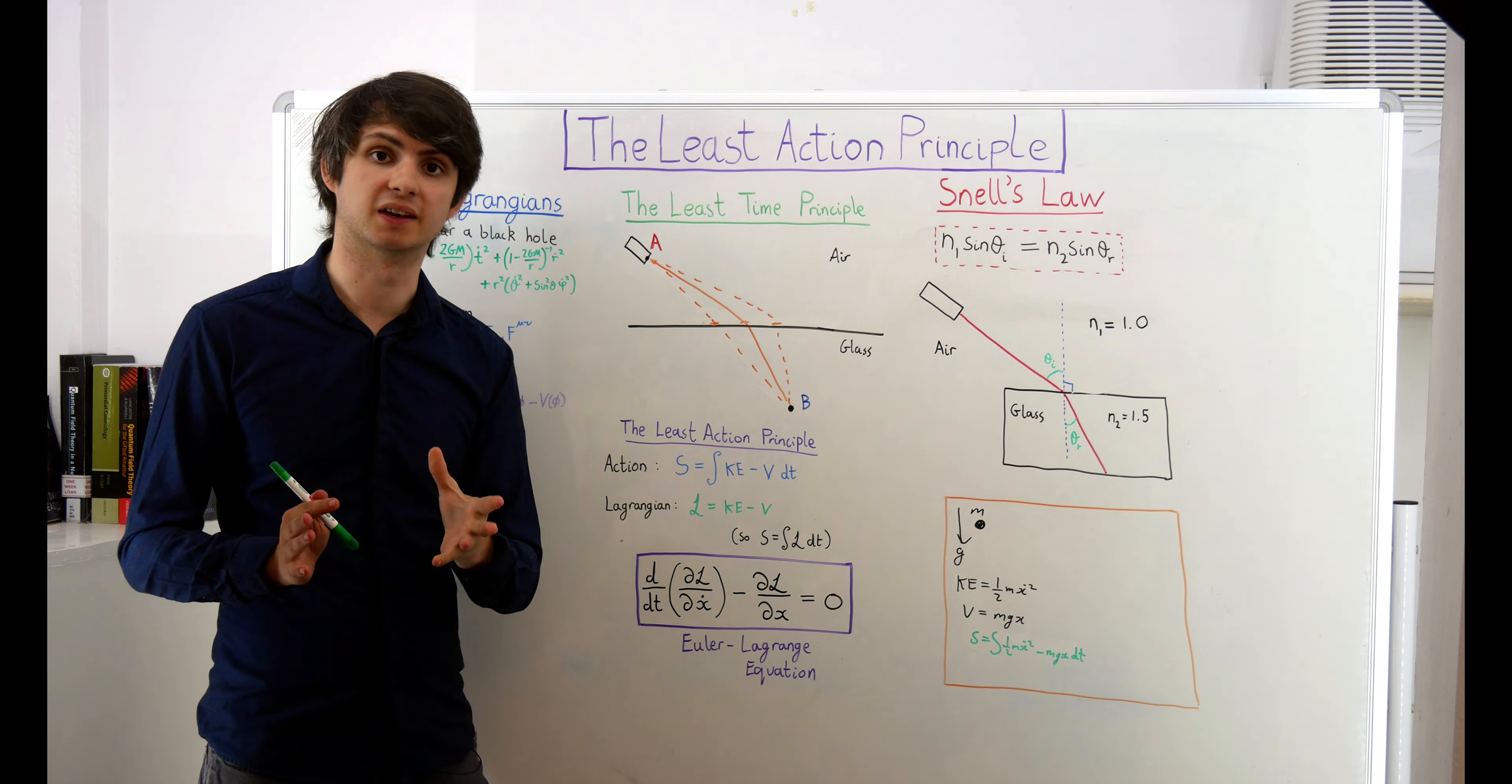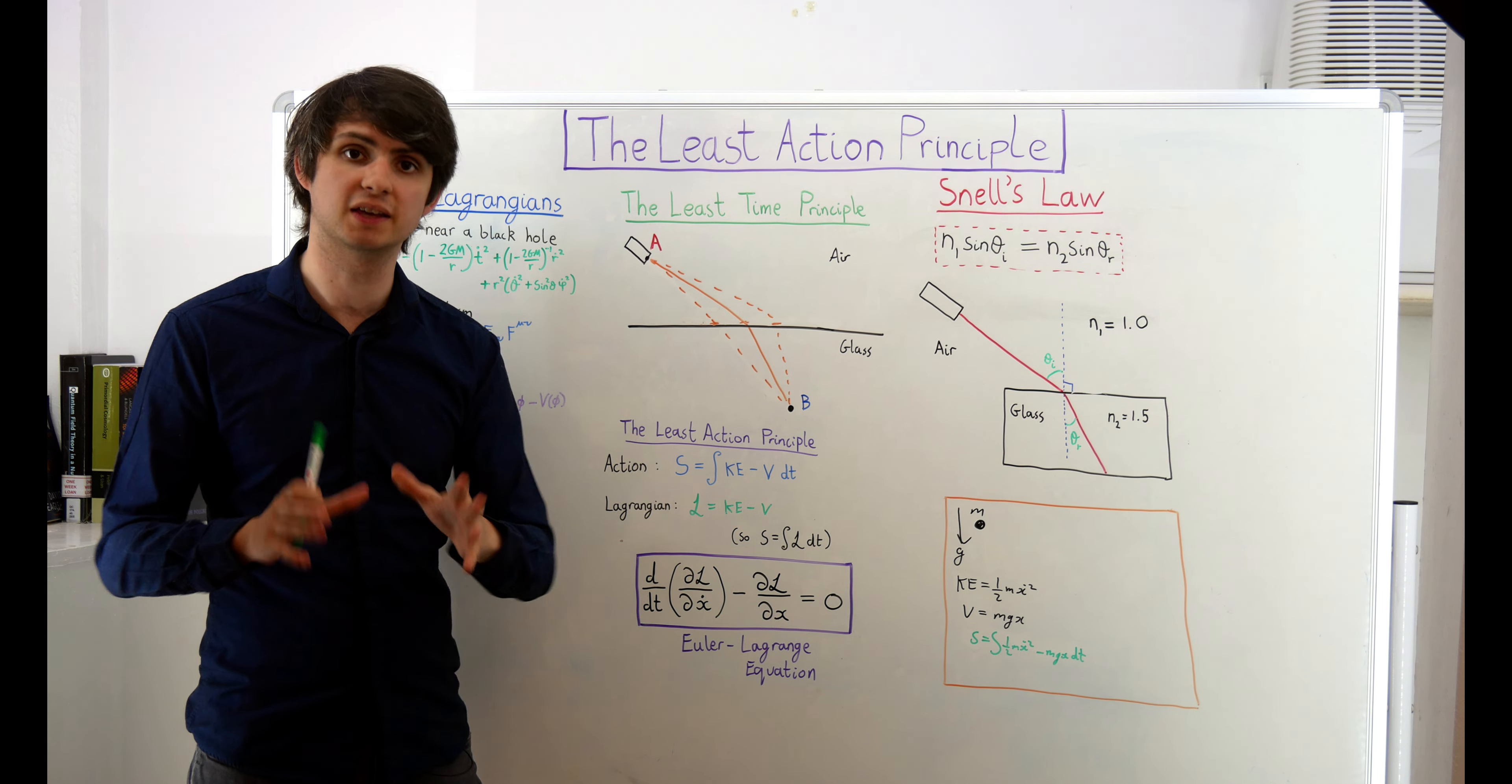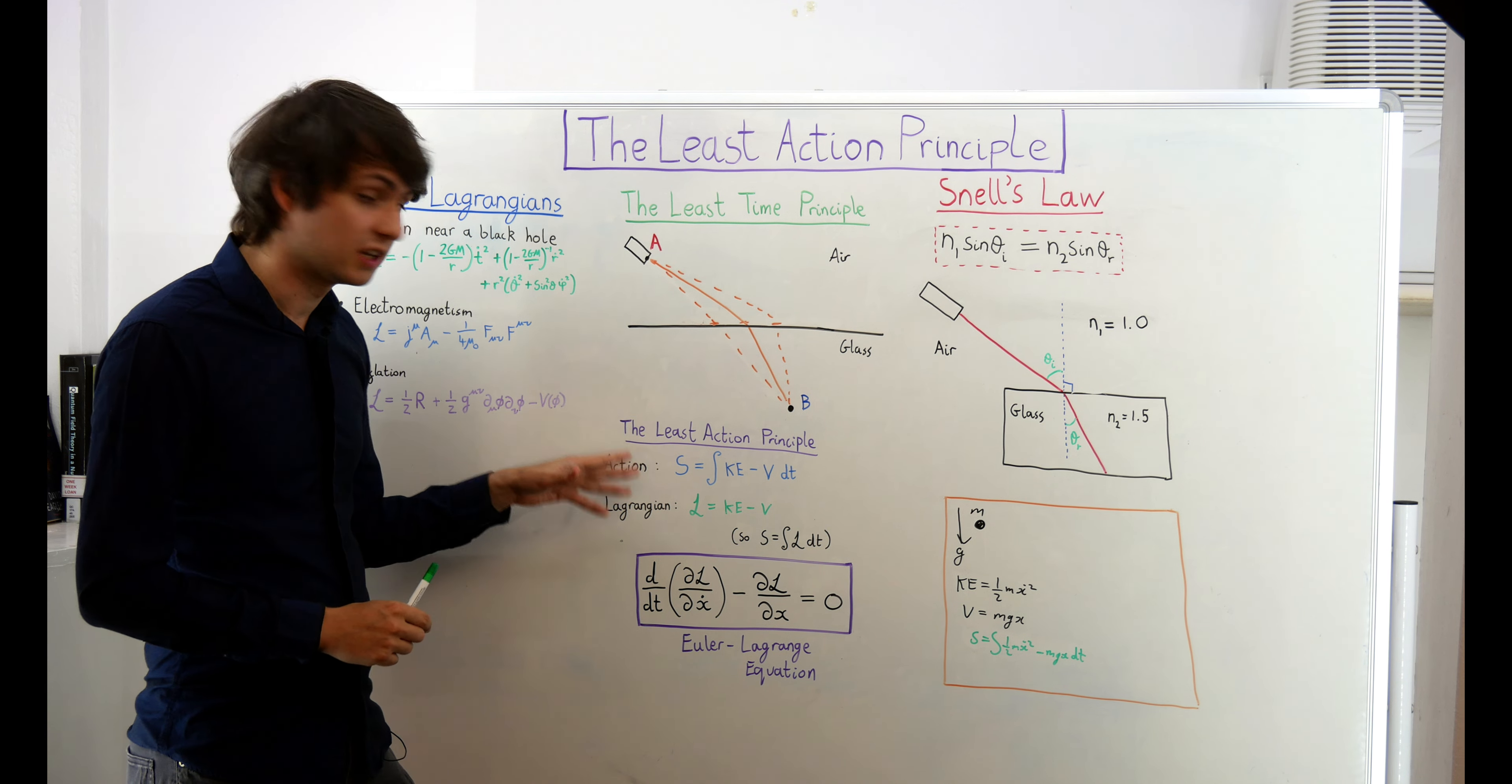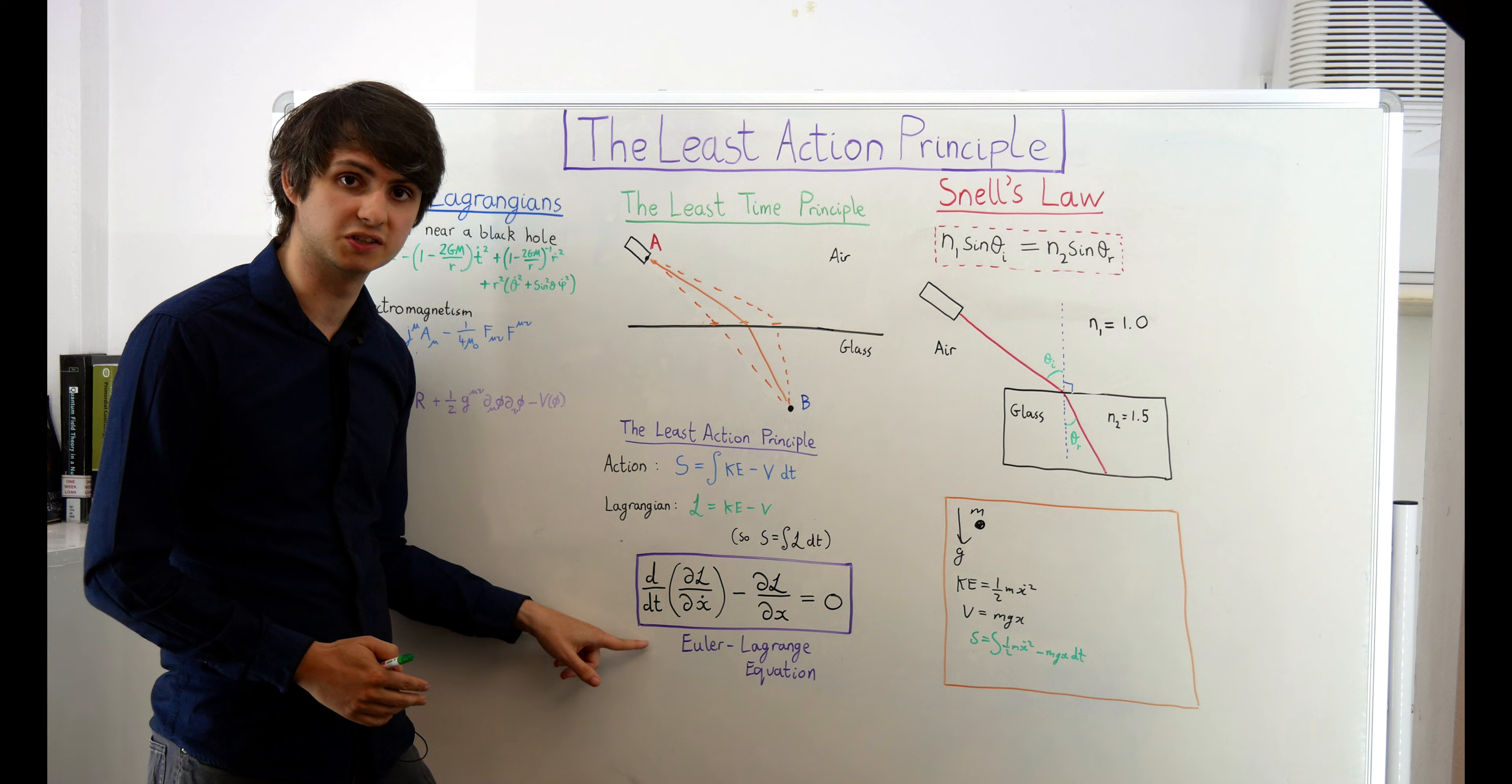Now, what we're claiming here is that nature obeys a least action principle. That is to say that all physical systems will evolve in such a way as to minimize the total action. So how must a system behave in order to do this? Well, the action is minimized when this special function, the Lagrangian, satisfies an equation known as the Euler-Lagrange equation.